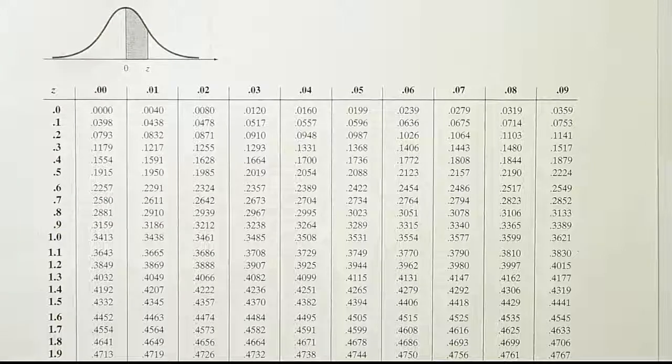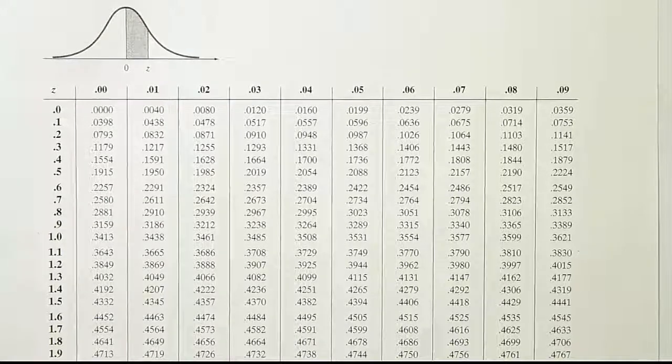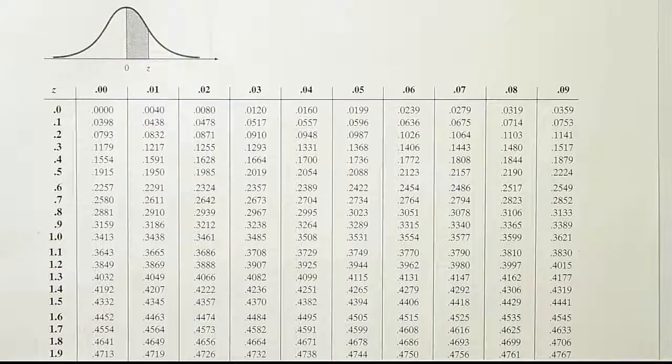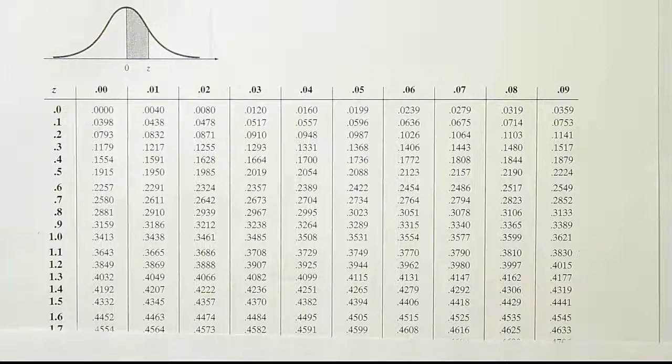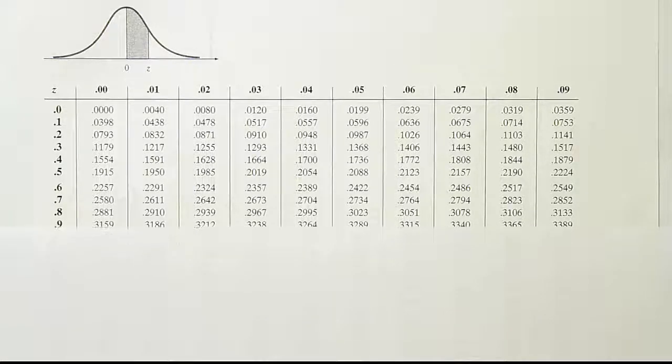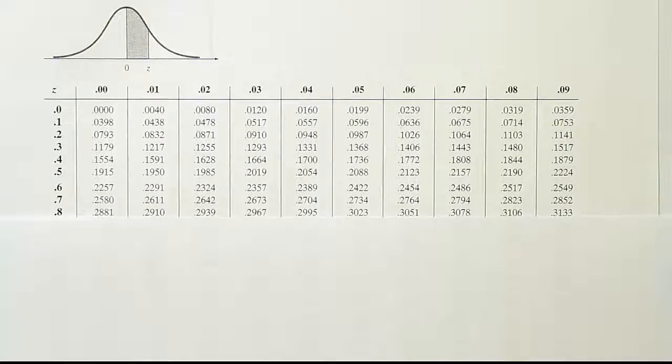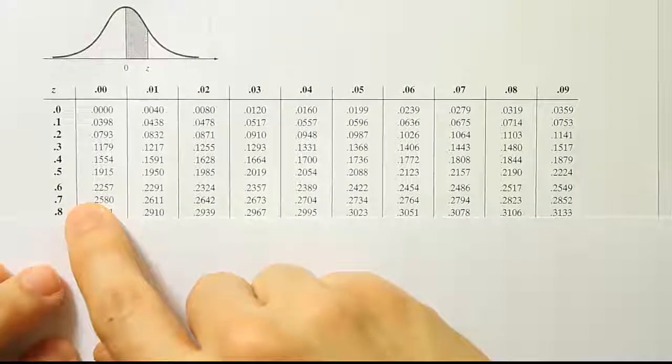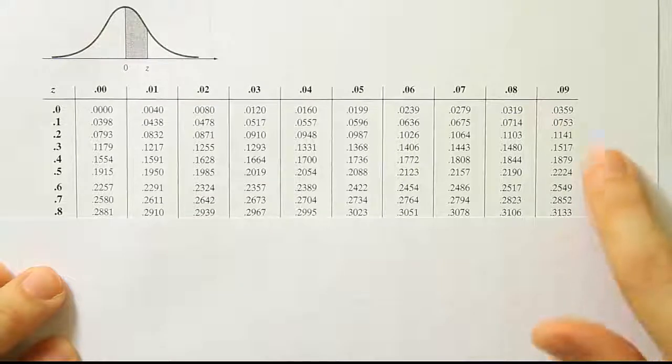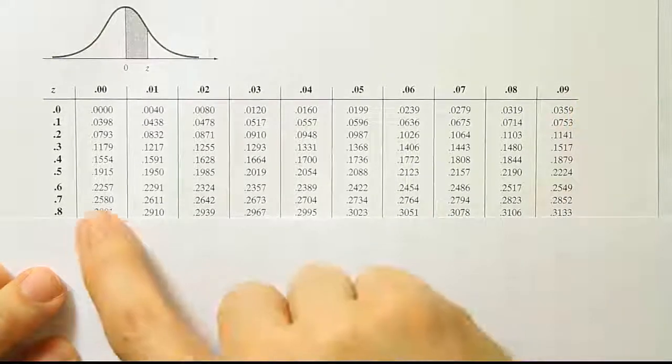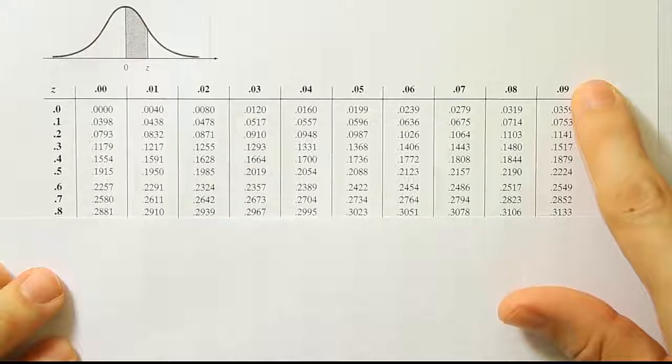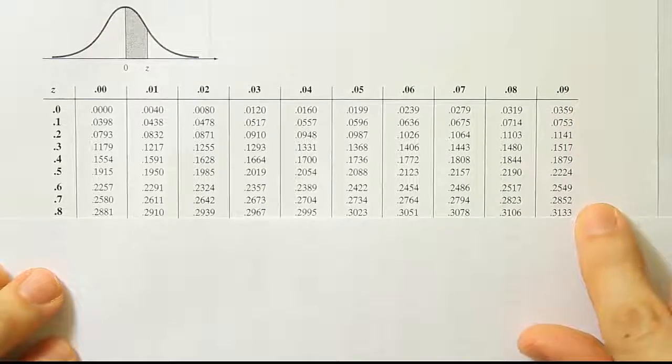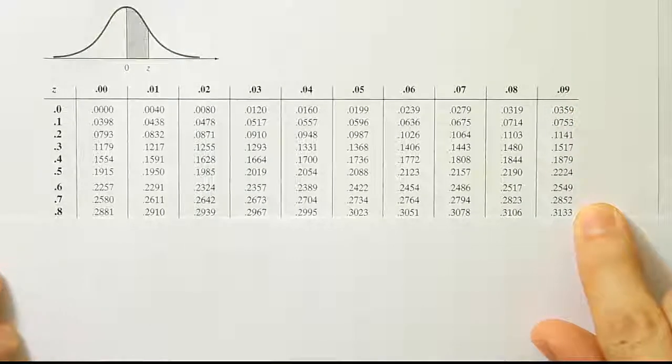Okay, and the next number we have to look up is 0.89. So let's find the 0.8 on the curve. We'll see that 0.8 is there. And then because the last digit is 9 it's going to be 0.8 and then all the way over to where we see the 9, right? So 0.8 and then all the way over to the 0.09 and we get the answer 0.3133.